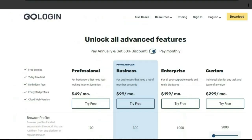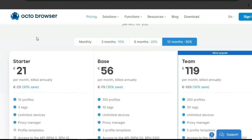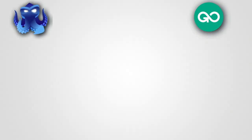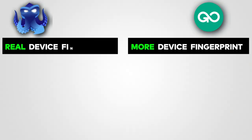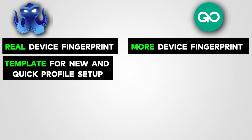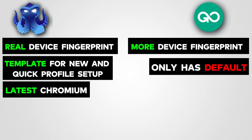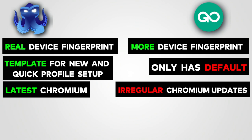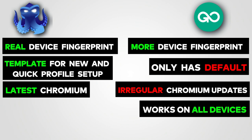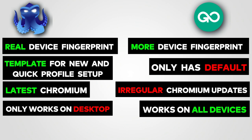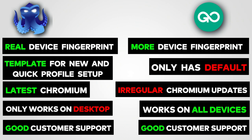Comparing the two: their prices are similar but GoLogin is actually cheaper, while OctoBrowser has more features. GoLogin has more fingerprints but OctoBrowser gives you real fingerprints. OctoBrowser has a template option for creating profiles quickly while GoLogin only has a default. OctoBrowser uses the latest Chromium, while GoLogin's updates are irregular. GoLogin works on cloud and also has a mobile app, whereas OctoBrowser only works on desktop. Both have good customer service.